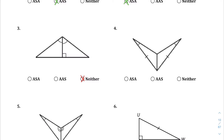Looking at question four, we have an angle, a side, and then another side that they're sharing — angle, side, side. Not only does that spell a derogatory word, but we don't have an angle-side-side congruence theorem, so we're going to go with neither.